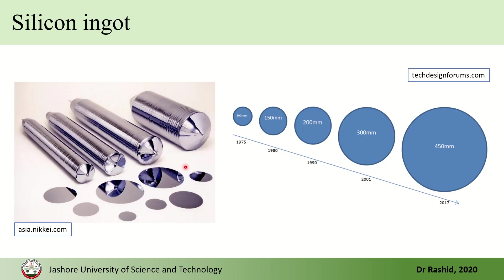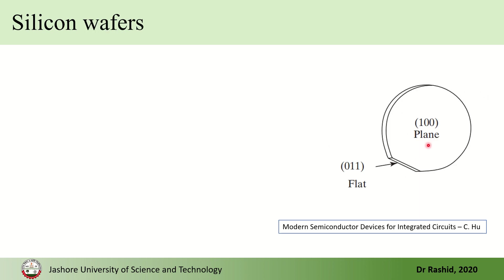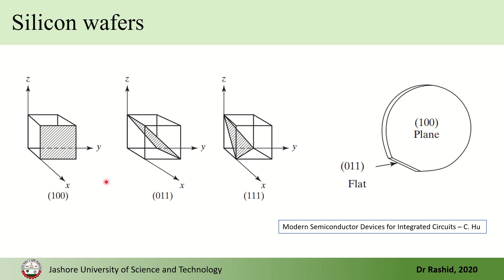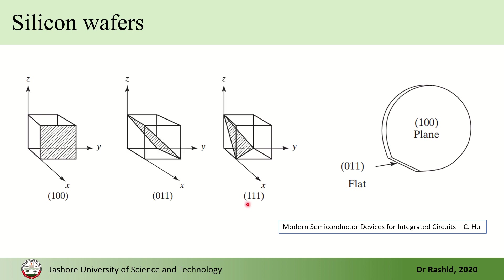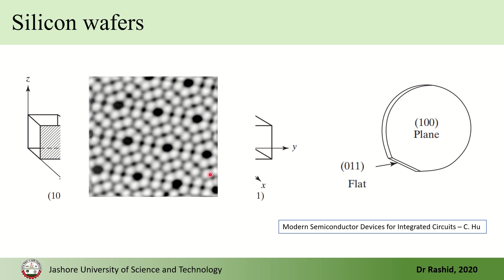When the wafers are prepared, they are sliced along the (1 0 0) crystal plane. To make orientation easy to identify, there is also sometimes a flat edge cut along the (0 1 1) plane. So we have the (1 0 0), the (0 1 1), and the (1 1 1) planes. This is an STM image of the (1 1 1) plane where individual atoms can be visualized.